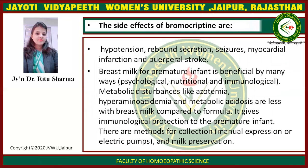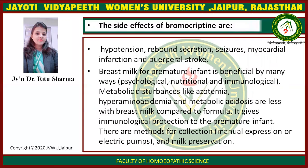The side effects of bromocriptine are hypotension, rebound secretion, seizure, myocardial infarction, and puerperal stroke. Breast milk for premature infants is beneficial in many ways — psychological, nutritional, and immunological. Metabolic disturbances like azotemia, hyperaminoacidemia, and metabolic acidosis are less with breast milk compared to formula. It gives immunological protection to the premature infant. Methods for collection include manual expression or electric pumps, and milk preservation.